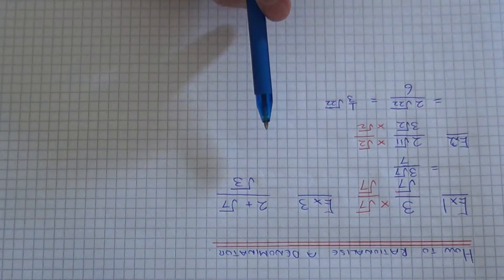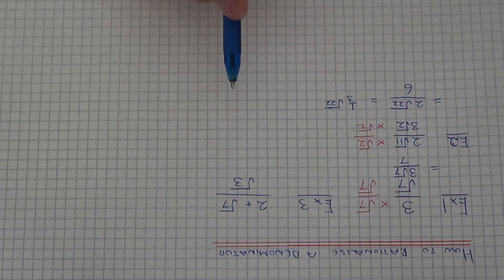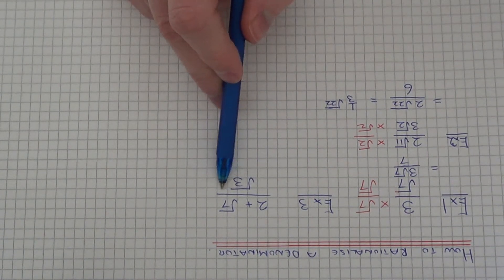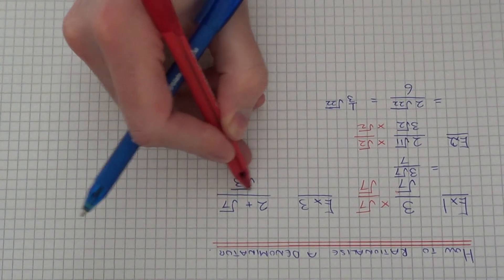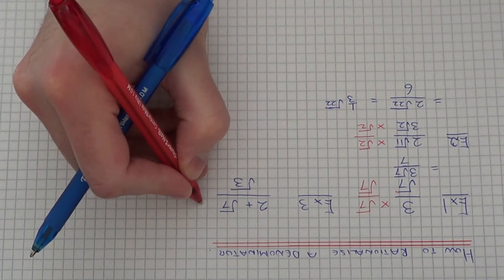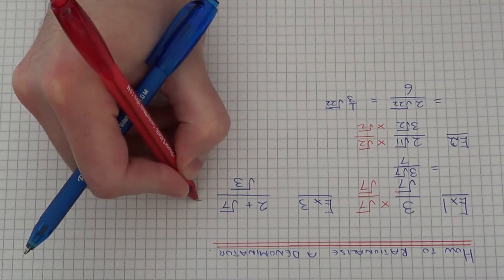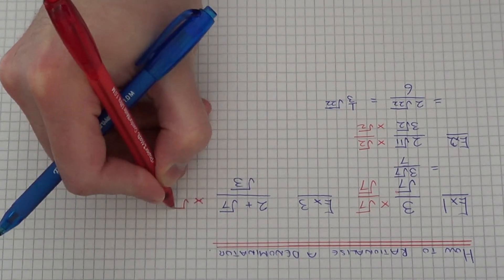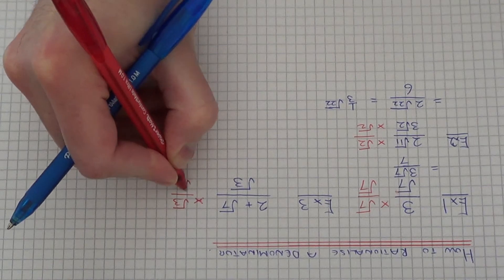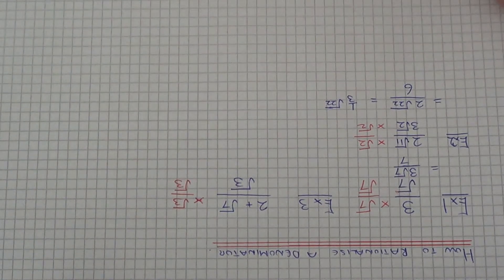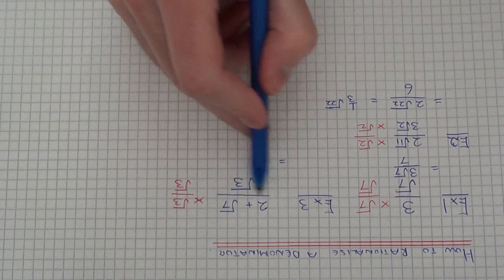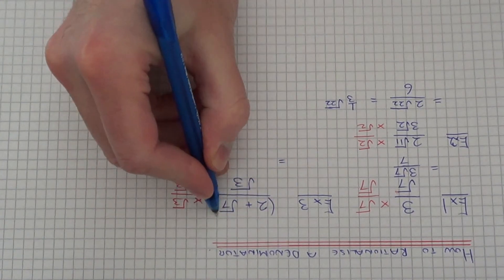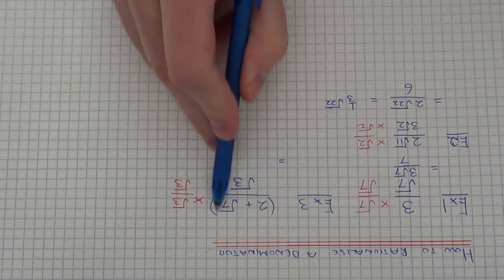So let's look at our final example. So in example 3, we need to rationalise this fraction here. So we need to multiply the numerator and denominator by root 3. So the whole numerator must be multiplied by root 3, not just the last number. So it's like a single bracket on the numerator.